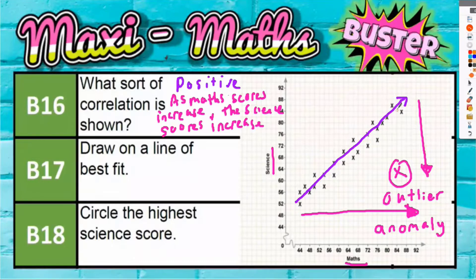It doesn't even have to touch all the crosses. I think that line is only touching two or three crosses. It doesn't actually even have to touch any crosses, as long as it's passing through the general direction of the crosses.